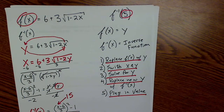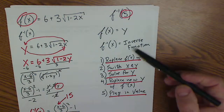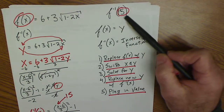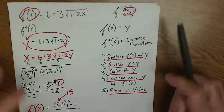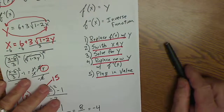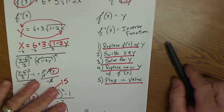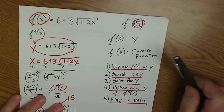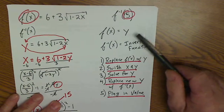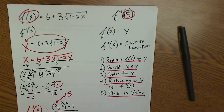So that is how to find the inverse function, and once you have it, plug in a value to evaluate it. That's my five-step process — hopefully it helped with finding inverse functions and plugging values in. Thanks for watching!